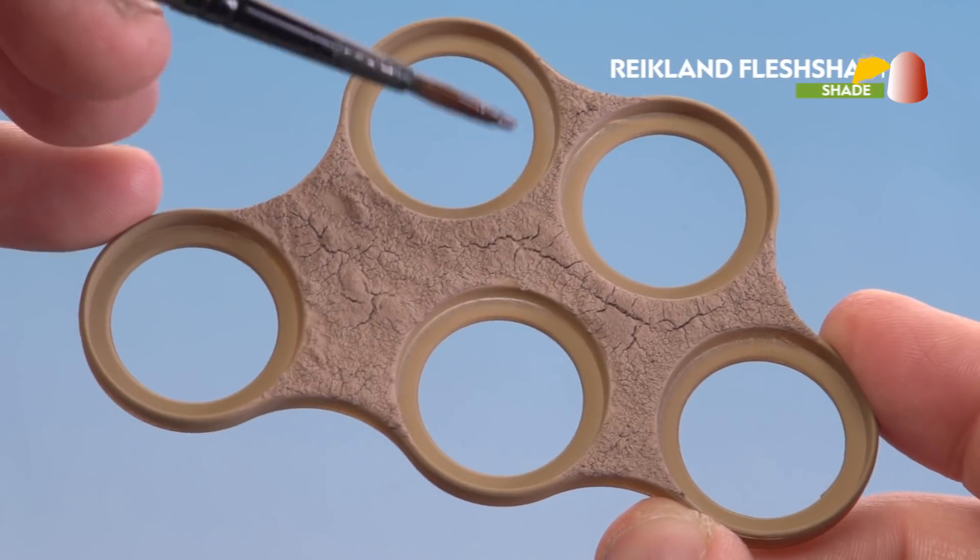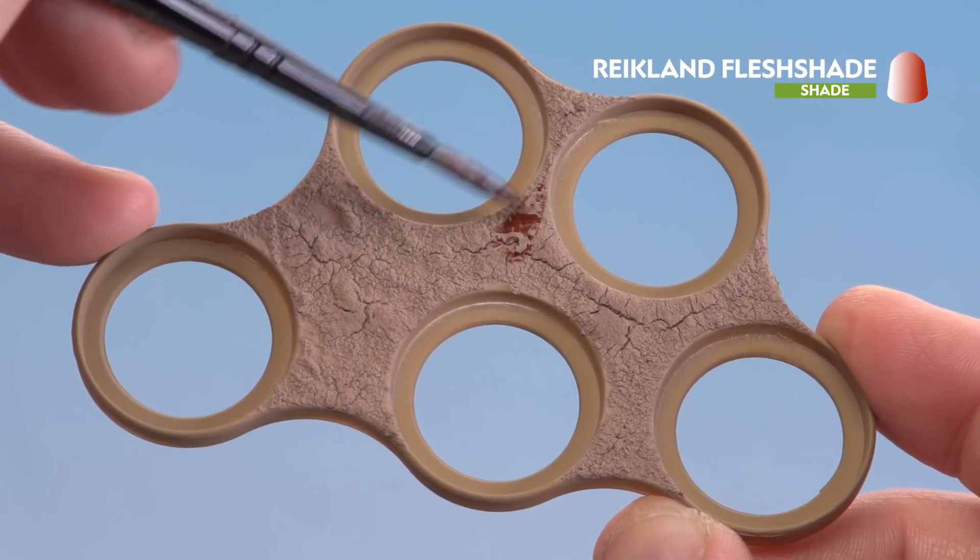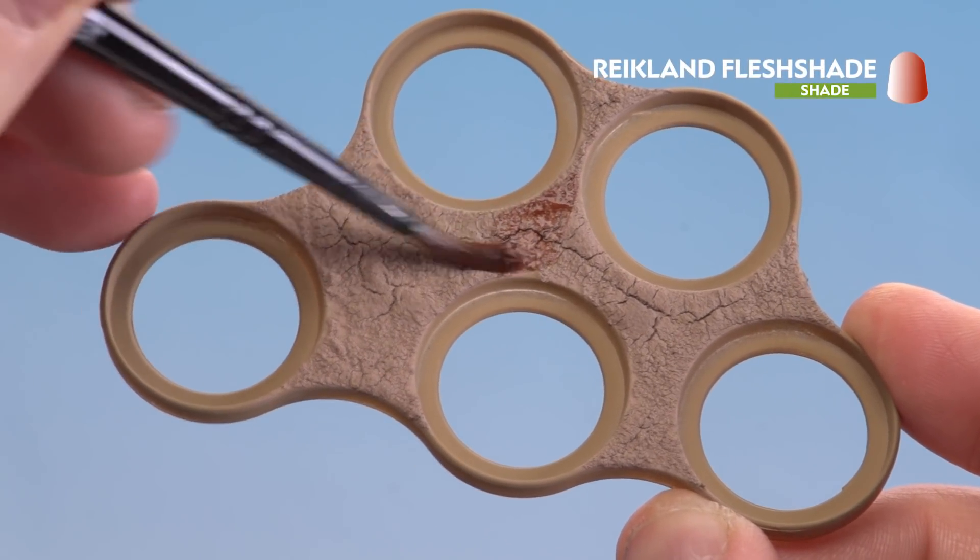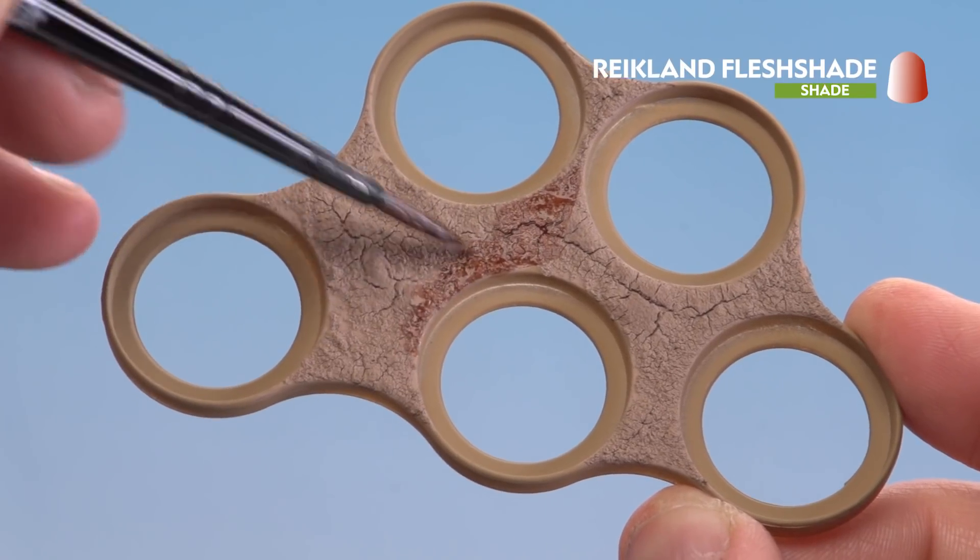There we are with the texture now dry. All I'm going to do now is start applying Reikland Fleshshade and I'm only going to be applying it onto the top where the texture is. I don't actually want it to go into the areas where the bases will sit.